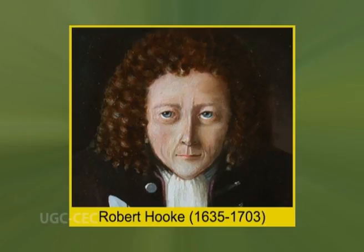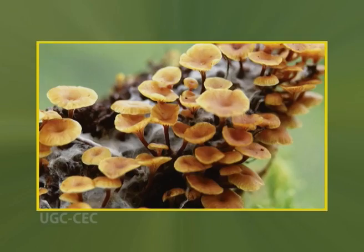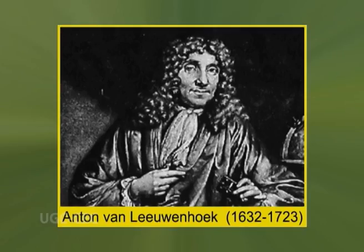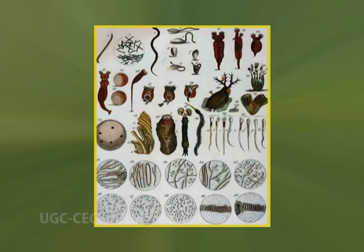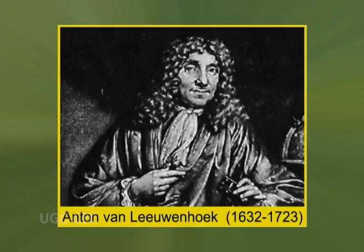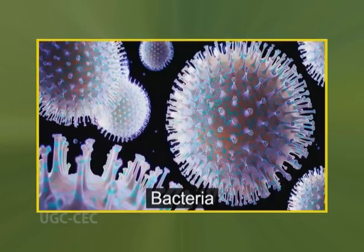Robert Hooke is reputed to have observed strands of fungi among the specimens of cells he examined. In the 1670s and the decades thereafter, a Dutch merchant named Anton van Leeuwenhoek made careful observations of microscopic organisms which he called animalcules. Until his death in 1723, van Leeuwenhoek revealed the microscopic world to scientists and is regarded as one of the first to provide accurate descriptions of protozoa, fungi, and bacteria.